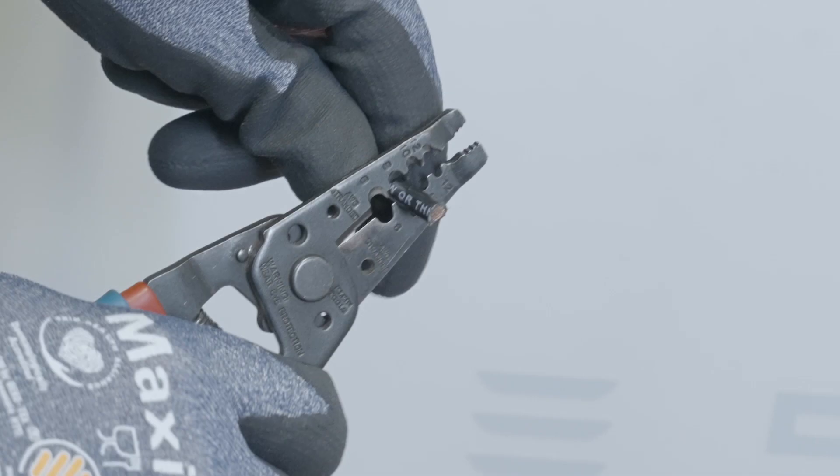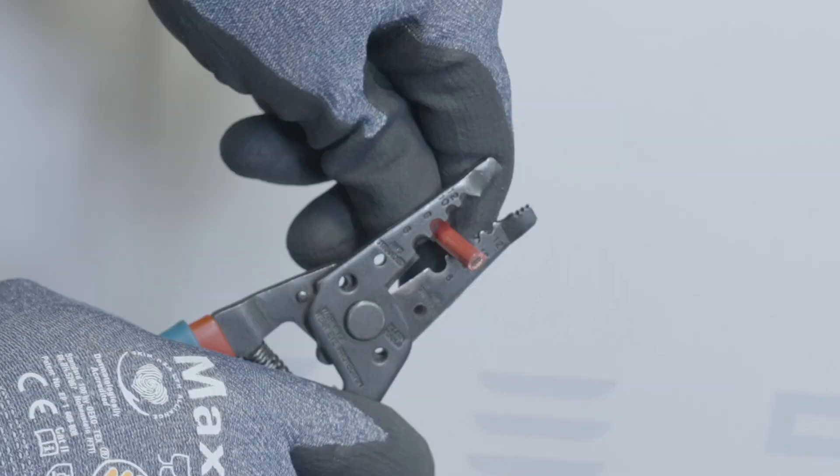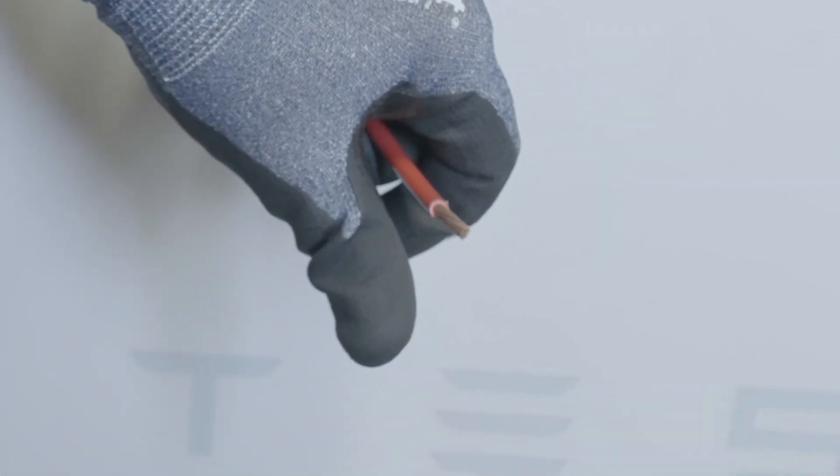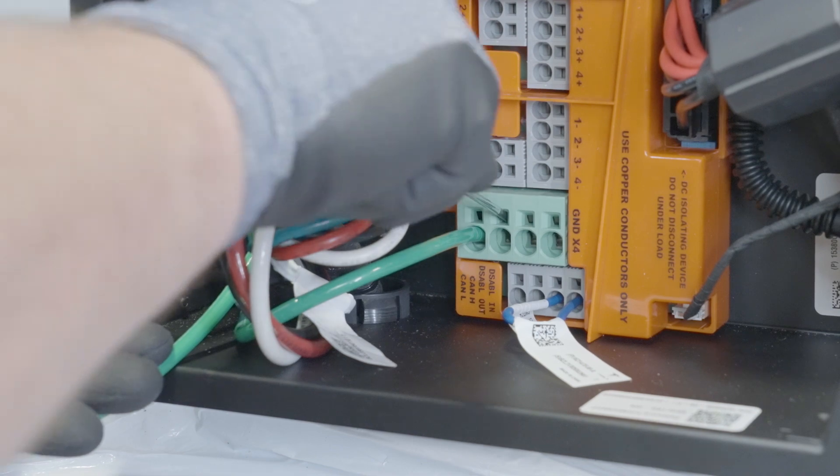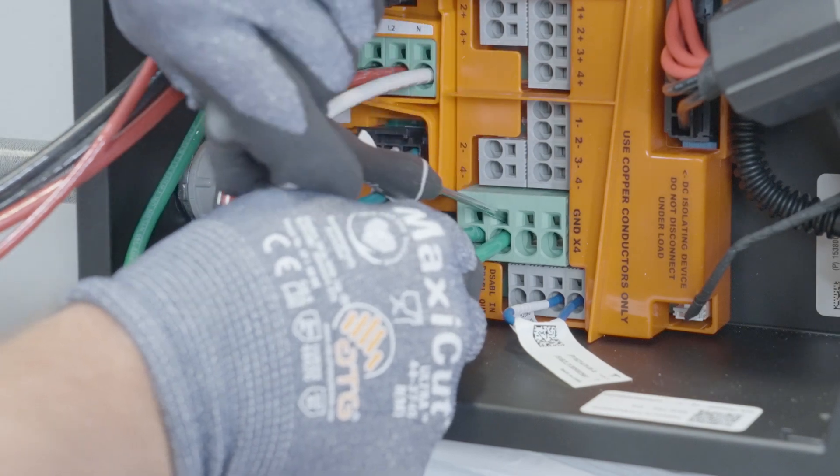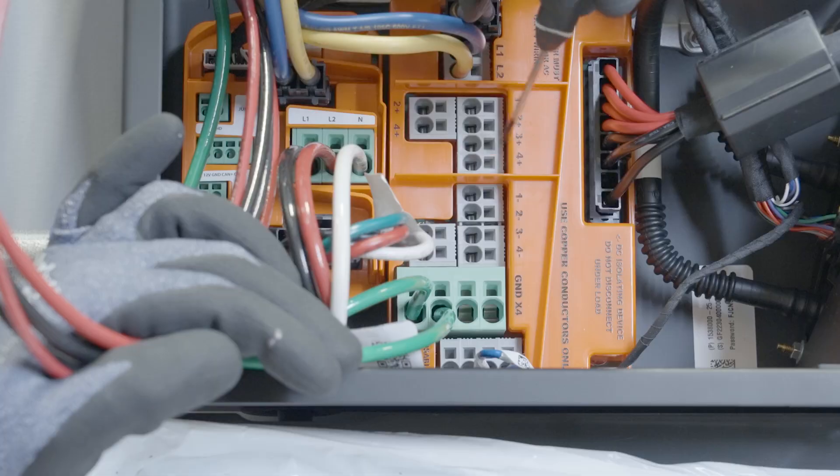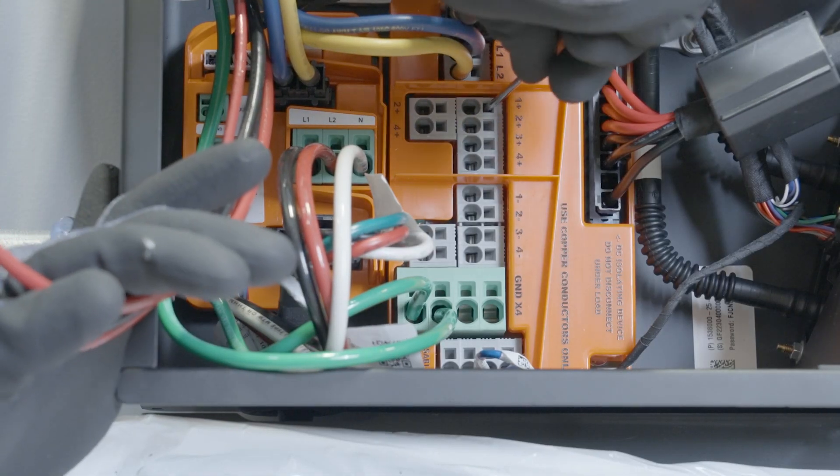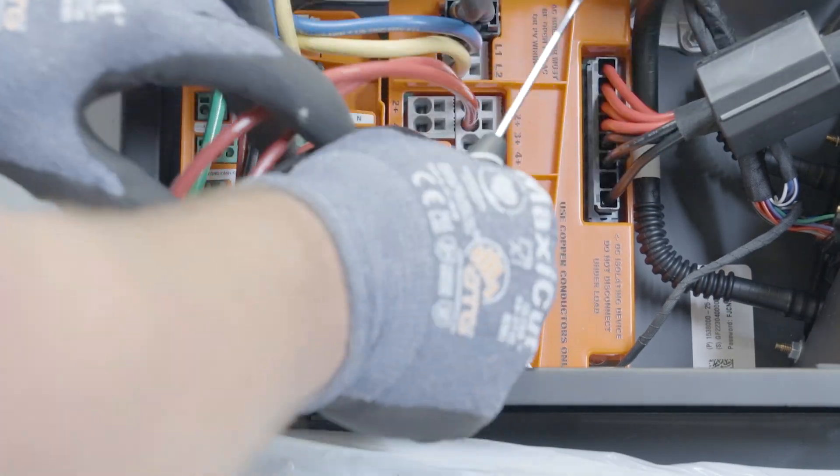Strip half an inch of insulation from each DC conductor. Similar to the AC conductors, insert a cabinet-tipped flathead screwdriver into the rectangular hole and terminate the equipment grounding conductors in the ground terminals. Terminate the positive and negative DC conductors in their respective terminals.